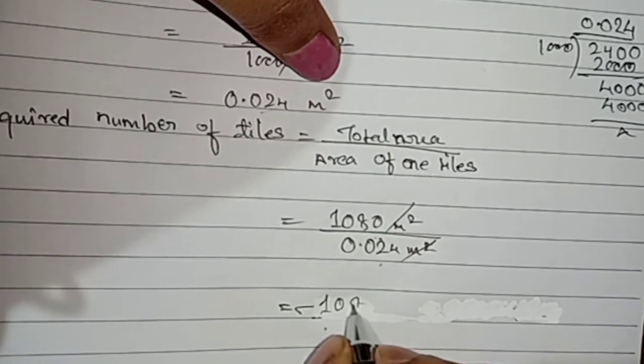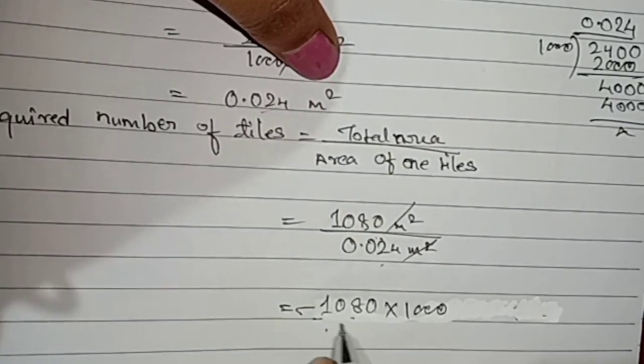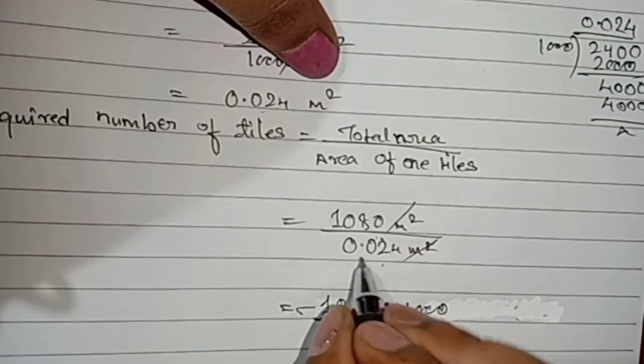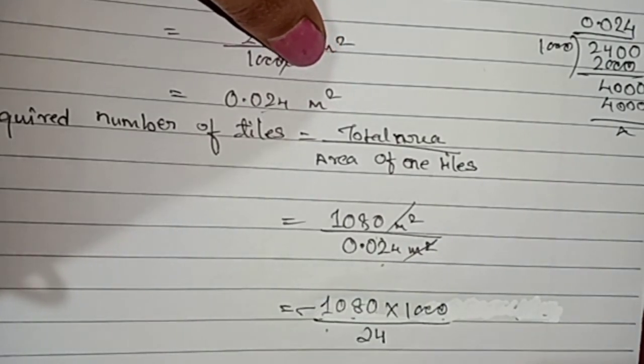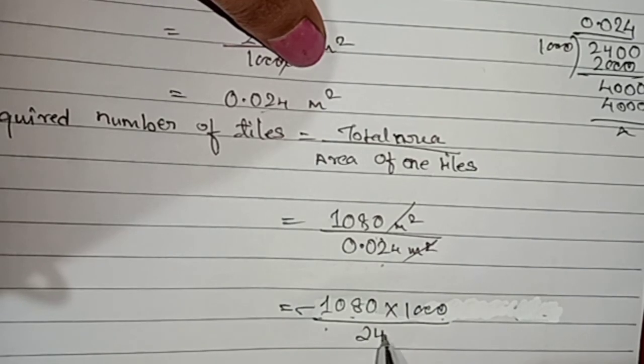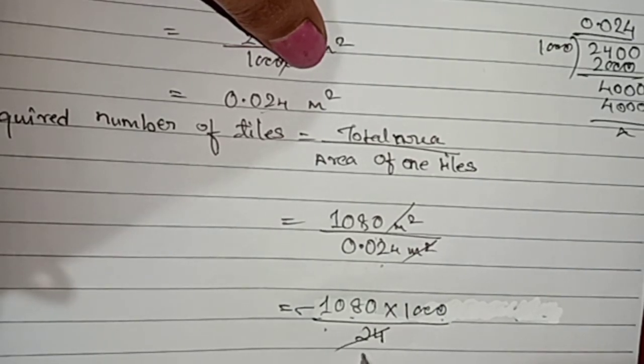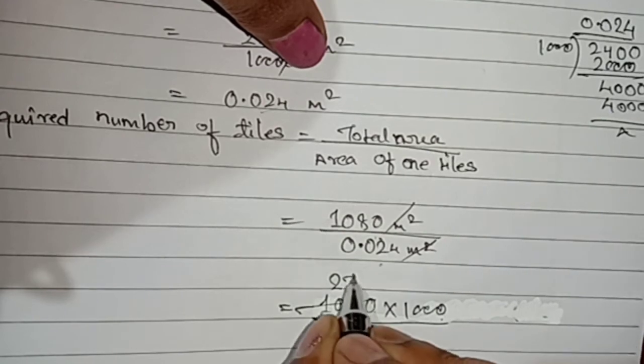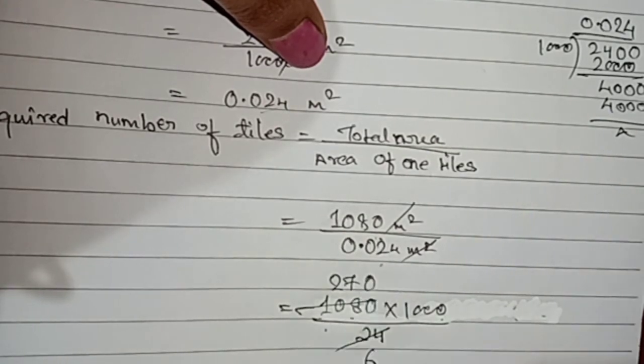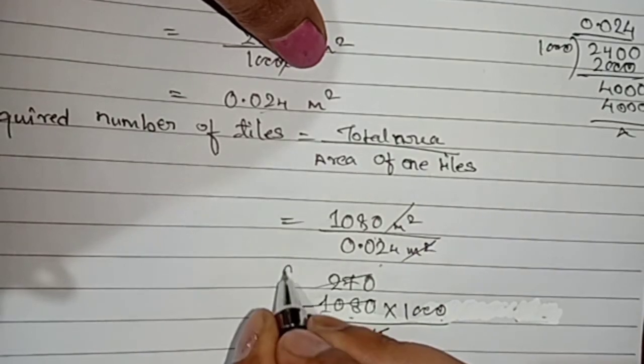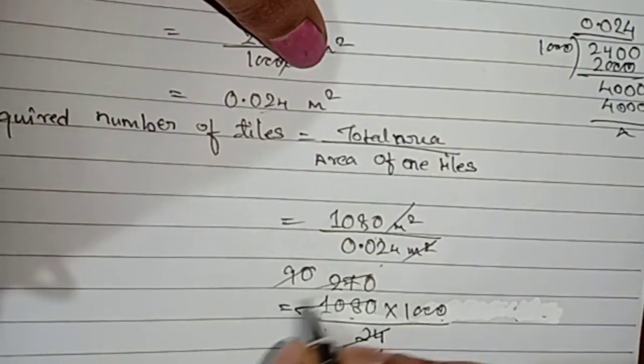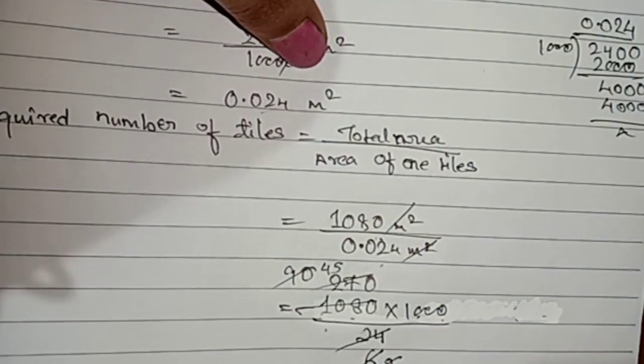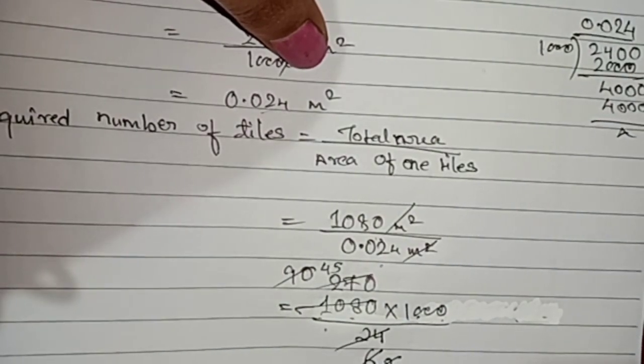1080 into 1000 divided by 24. I have removed the decimal sign. We will divide with 1000 with 1000. 4 6 are 24. 4 6 are 24 and 4 2's are 8. 4 7's are 28 0. Then 3 2's are 6. 3 9's are 27 0. 2 1's are 2. 2 4's are 8. 2 5's are 10. So 45 into 1000 will be 45000.